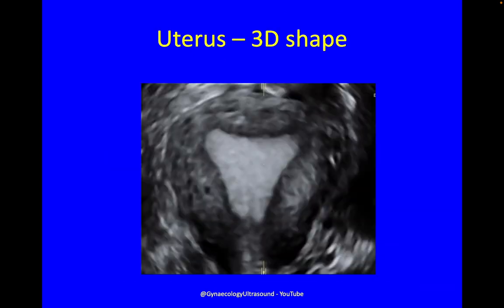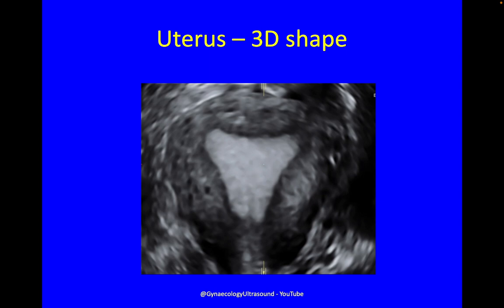Then I usually take a quick 3D. A lot of TV probes have this now — it takes almost no time at all. You render that and you've got a coronal view of the fundus, the right side, the left side, and a lovely triangular endometrial cavity. It's quite white because this endometrium was in the luteal phase, which is the best phase to be looking for congenital uterine anomalies.